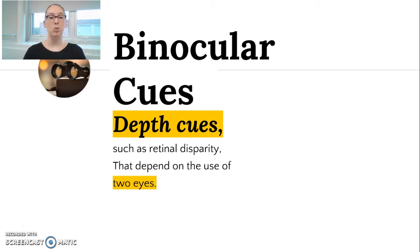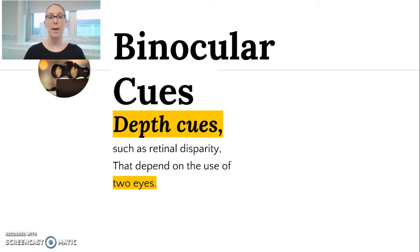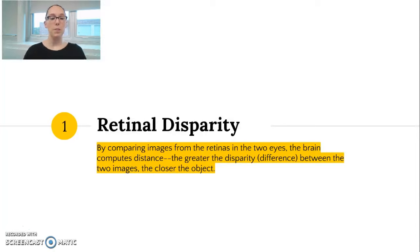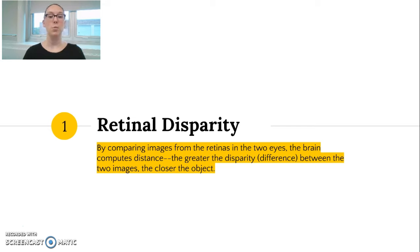These are depth cues, such as the one we're going to learn in this video called retinal disparity, that depend on the use of two eyes. There are a couple of big depth cues that require a comparison of what each of our eyes is experiencing in order to figure something out about depth. Retinal disparity is defined as the process that involves comparing images from the retinas in both eyes, and when this comparison occurs, the brain computes distance.